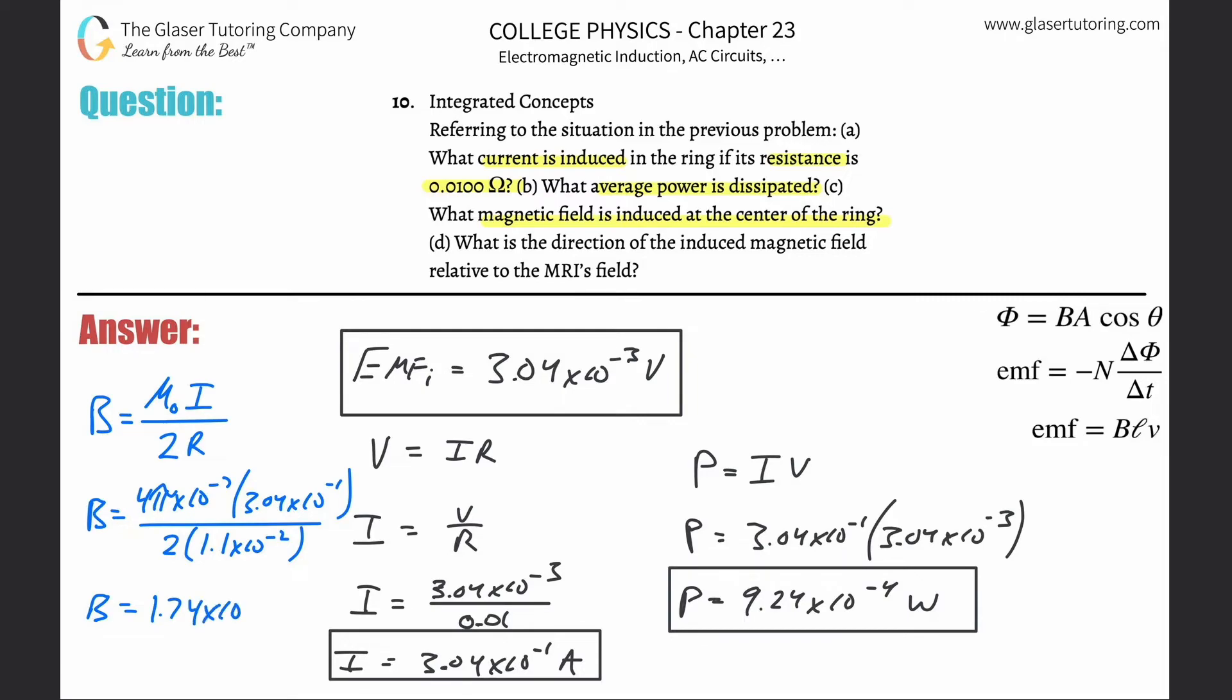That's that. And then letter D says what is the direction of the induced magnetic field relative to the MRI's field? So relative to the MRI.